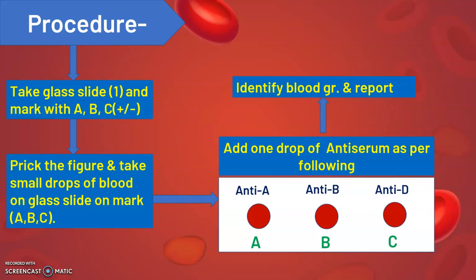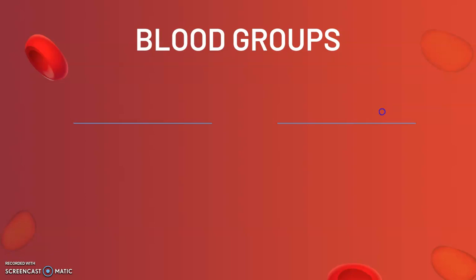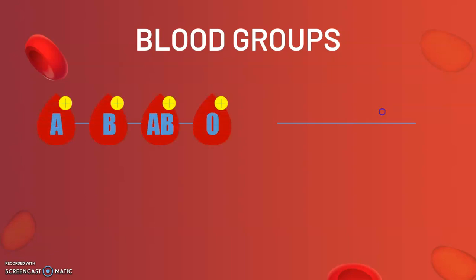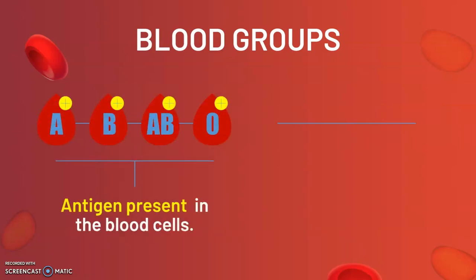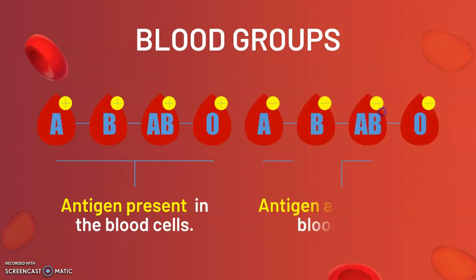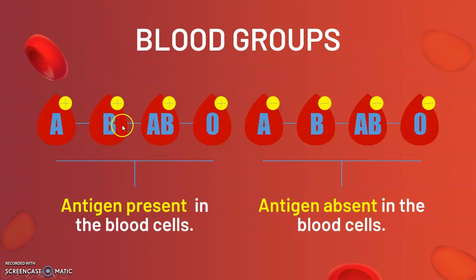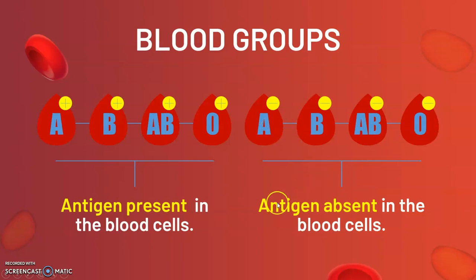Let us discuss the demo of this practical. As per antigen present or absent, there are a total of 8 blood groups. If antigen is present: A positive, B positive, AB positive, and O positive. If the antigen is absent, then the blood groups are AB negative, B negative, A negative, and O negative.